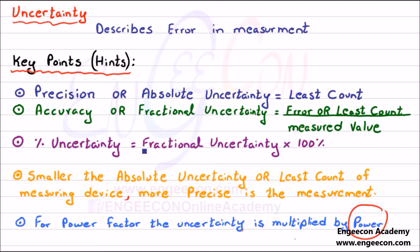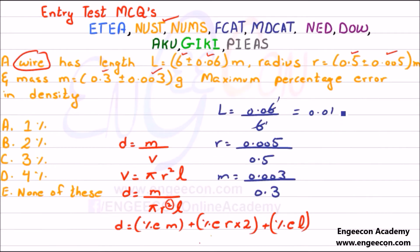From the key point, we can multiply the fractional uncertainty by 100% to get the percentage uncertainty or error. In this case, multiplying by 100% equals 1%. Similarly for radius and mass, the fractional uncertainties are both 0.01, which when multiplied by 100% equal 1% each.